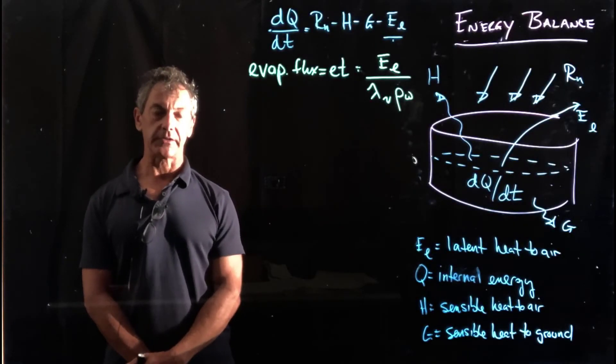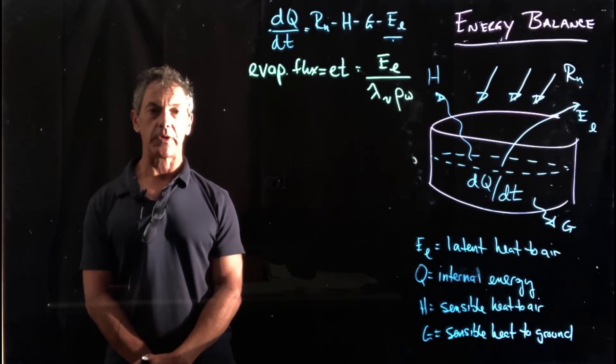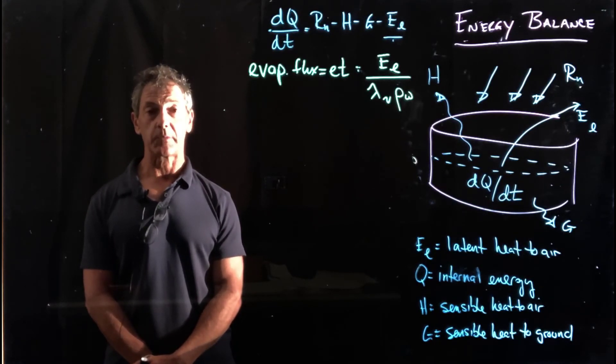In the simple radiation balance method of estimating evaporation, we made the assumption that there is no sensible heat transfer to the atmosphere. And that's not a very good assumption.